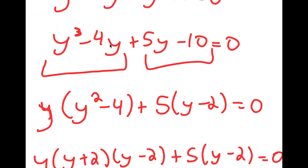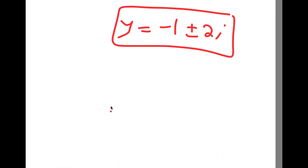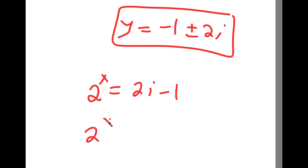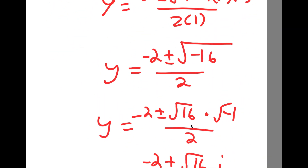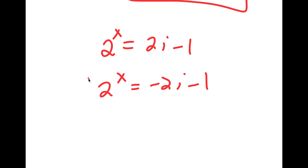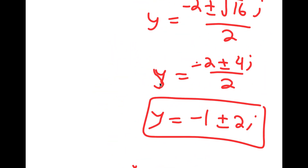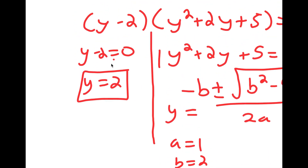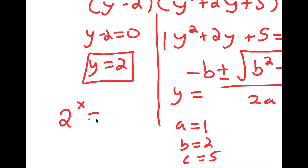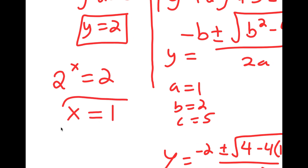Remember how we let 2 to the power of x equal to y. So I get 2 to the power of x is equal to 2i minus 1, and 2 to the power of x is equal to negative 2i minus 1. However, we can't take a positive number to a power and make it equal to something with i, so there is no solution for these. This means we can only use y equals 2, so I get 2 to the power of x equals 2, meaning our only solution for x is 1.